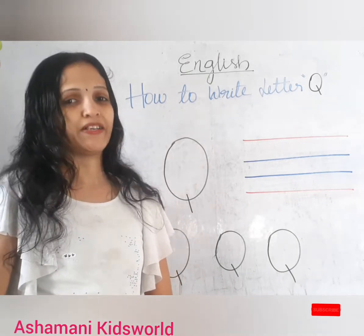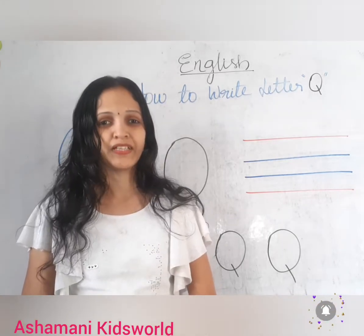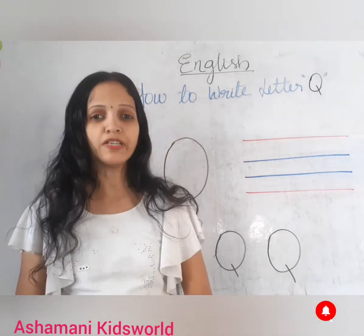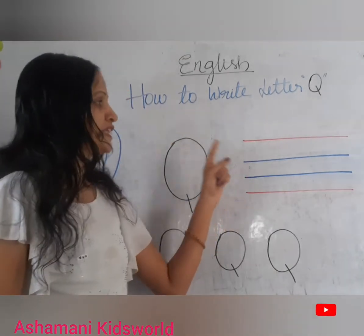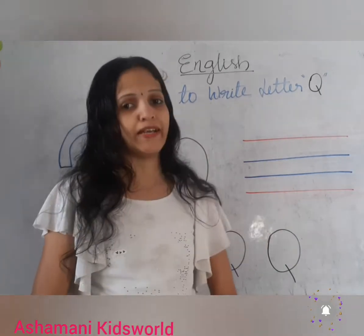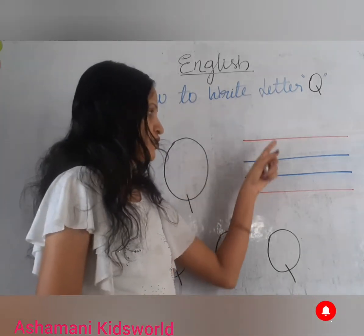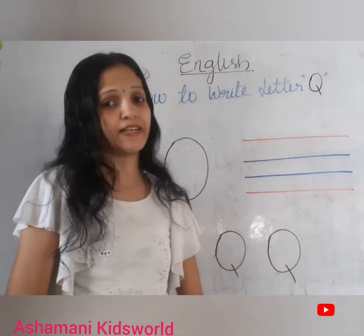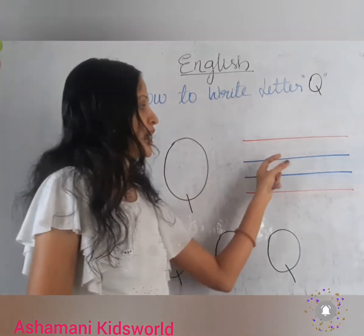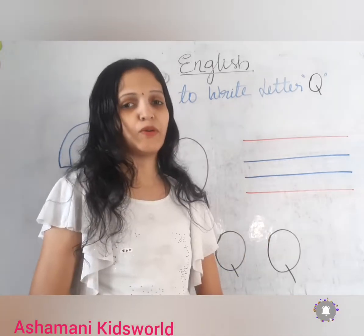Coming to line format — the four-rule book. How will you write in your notebook? Children, how will you write capital Q in your notebook? Here in your notebook, you will find two red and two blue lines. This is the top red line and this is the bottom red line. In between the red lines, we have two blue lines — this is the first blue line and this is the second blue line.